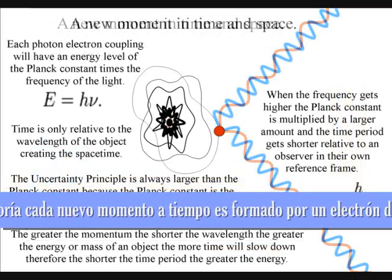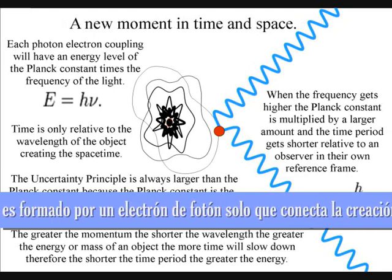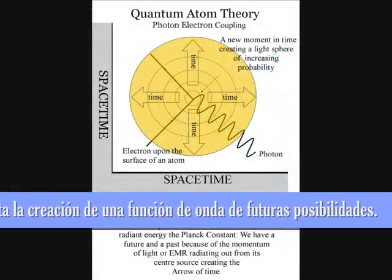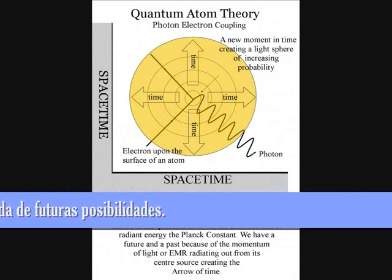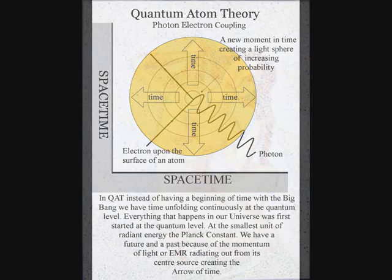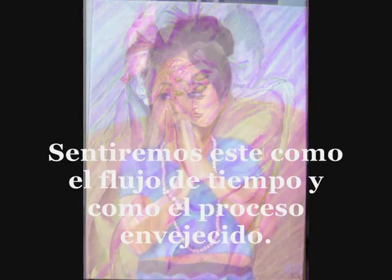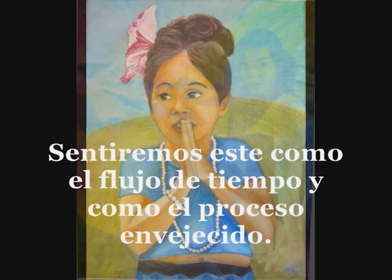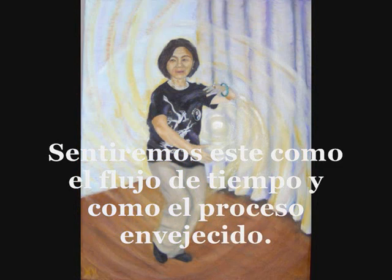In this theory, at the quantum level of the atoms, the moment of now is created by a single photon-electron coupling, creating a wave function of future possibilities. Even the individual atoms of the observer are radiating electromagnetic radiation continuously. The observer will feel this as the continuous flow of time and as the aging process.